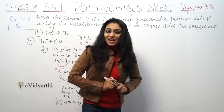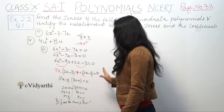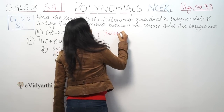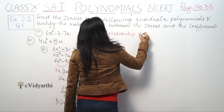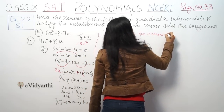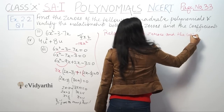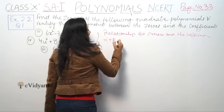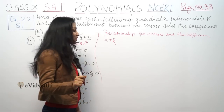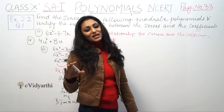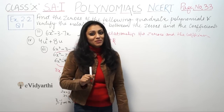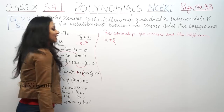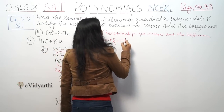Now the second half of the question: we will verify the relationship between the zeros and the coefficients. First, let's look at the sum of zeros, which is alpha plus beta. As covered in the last video, for a quadratic equation ax squared plus bx plus c, alpha plus beta is equal to minus b by a.